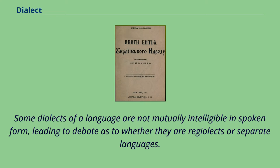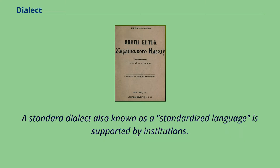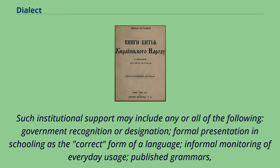Some dialects of a language are not mutually intelligible in spoken form, leading to debate as to whether they are regiolects or separate languages. A standard dialect, also known as a standardized language, is supported by institutions. Such institutional support may include government recognition or designation, formal presentation in schooling as the correct form of a language, and informal monitoring of everyday usage.